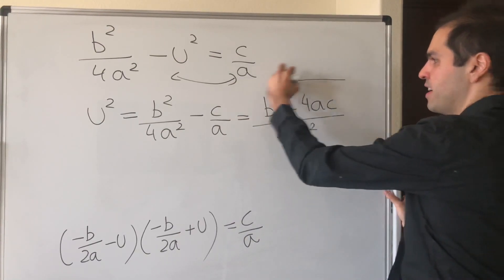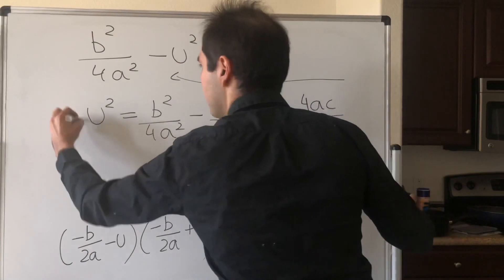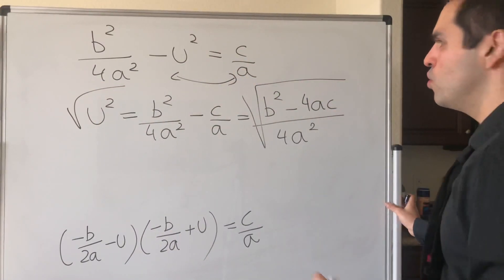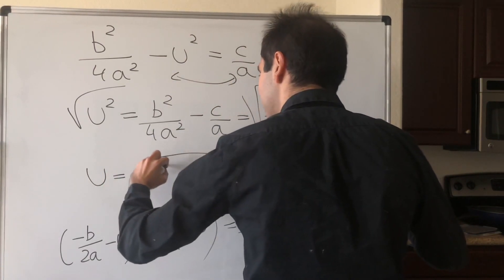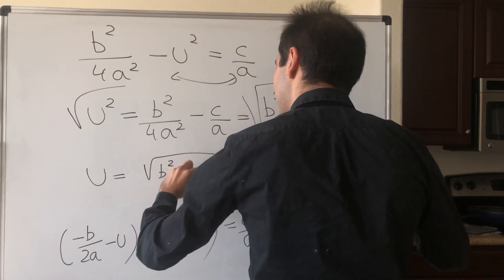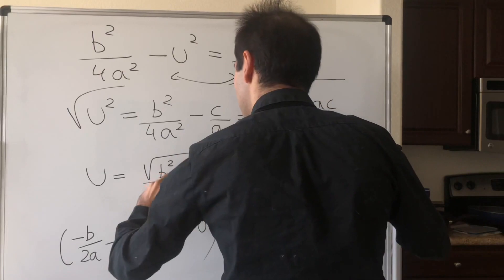Lastly, just take the square root. What you get is u = √(b² - 4ac)/2a.